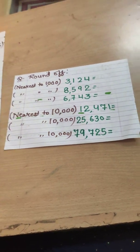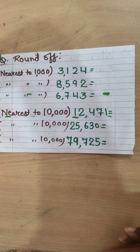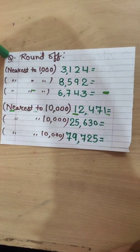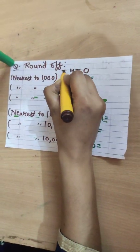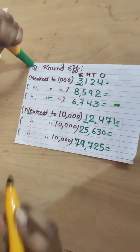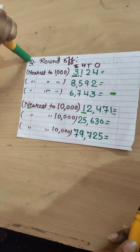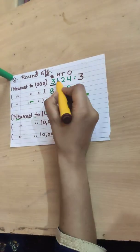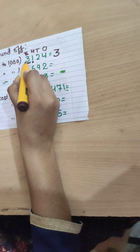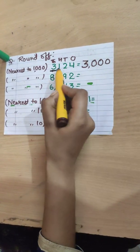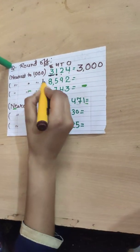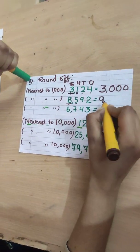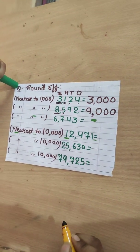Now for Class 5 topics: rounding off to the nearest thousands place and ten thousands place. For 3124, the thousands place digit is 3 and its previous digit is 1, which is smaller than 5, so 3 remains the same and the rest become 0 — answer is 3000. For the next number, the thousands place digit is 8 and its previous digit is 5, which falls in the greater category, so 8 becomes 9 — giving us 9000.